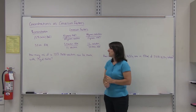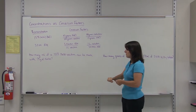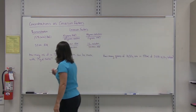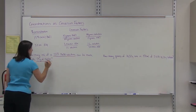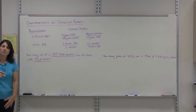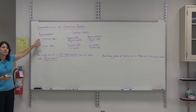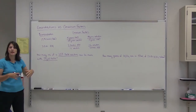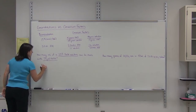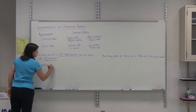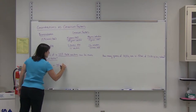The first example says: how many milliliters of a 35% NaOH solution can be made with 75 grams of NaOH? Notice that the 35%, since it's a percent, is a concentration. If you see a concentration — whether it's a percentage or a molarity — go ahead and write it as a fraction, because that's the way you're going to use it in the problem. So 35% NaOH means we have 35 grams of NaOH.